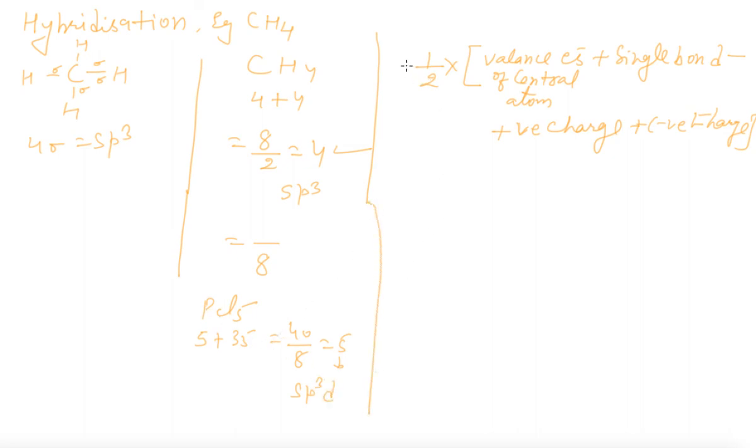One more formula: half multiplied by valence electron of central atom plus single bonds, minus any positive charge, plus any negative charge. You can take example of methane - it will come to 4, so SP³. Take example of ammonium ion: half times nitrogen valence electrons is 5, single bond hydrogen is 4, positive charge is 1. One is subtracted. Finally you get half times 8 equals 4, so hybridization is SP³.